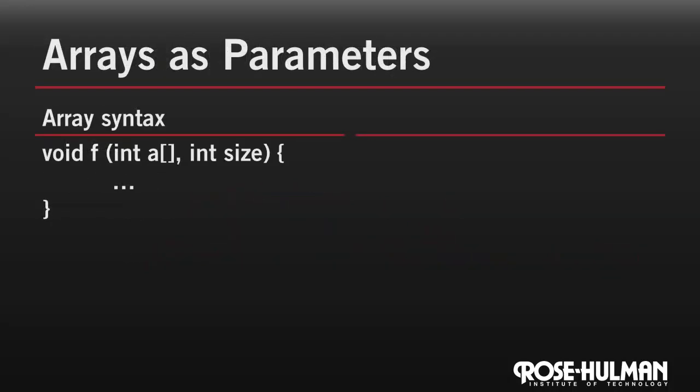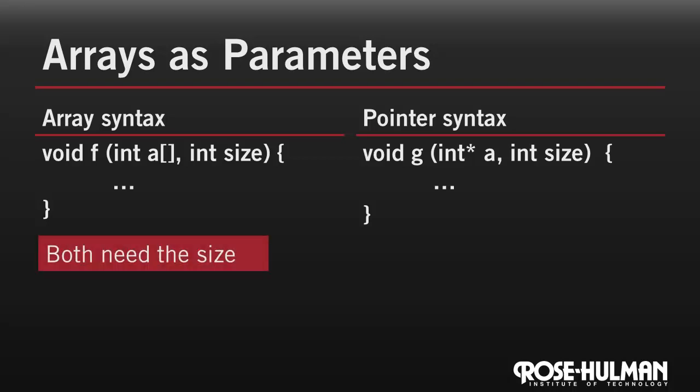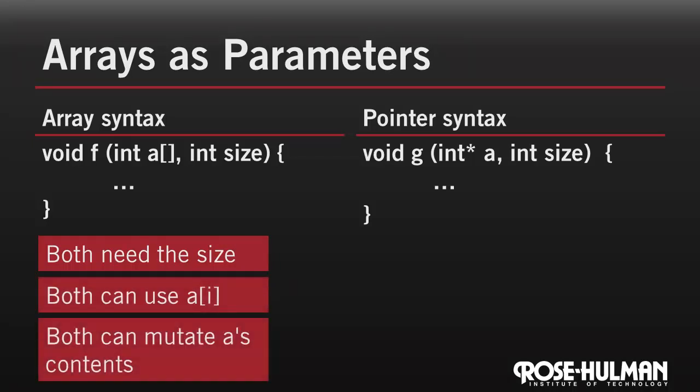The relationship between arrays and pointers carries over into parameter passing. Here's the syntax for passing an array to a function. Pointer syntax could also be used to pass an array to a function as well. int with the brackets and int star are almost equivalent. In particular, first of all, you'll note that in both cases a doesn't store its size. It must be passed around as a separate parameter. Second, in either case we can still use array subscripts. Third, both can access and change the elements of a.